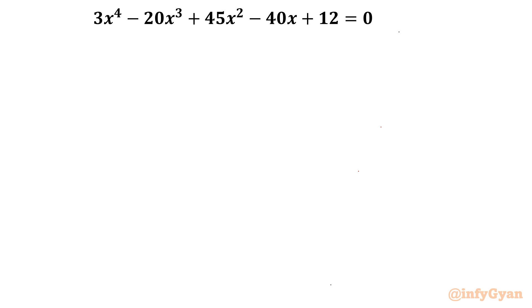3x power 4 minus 20x cube plus 45x square minus 40x plus 12 equal to 0. While solving this problem, I will mainly use algebraic manipulation, quadratic equation, quadratic formula and we will conclude our results. So let us get started.